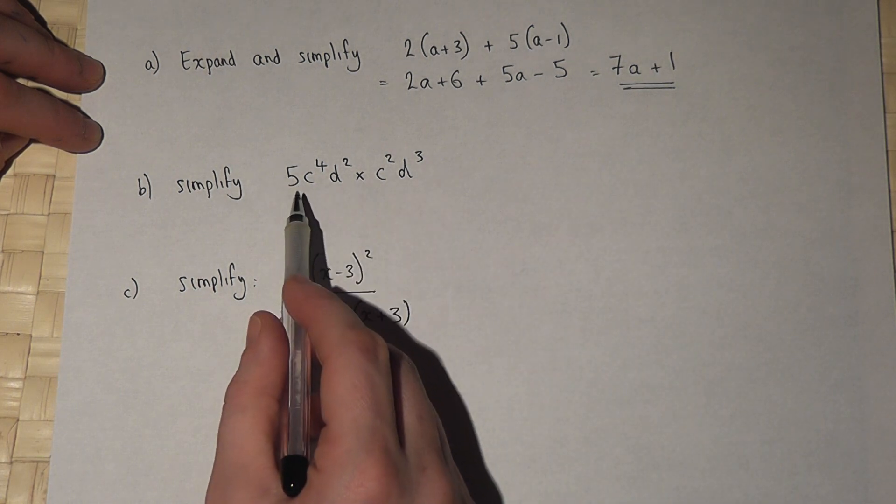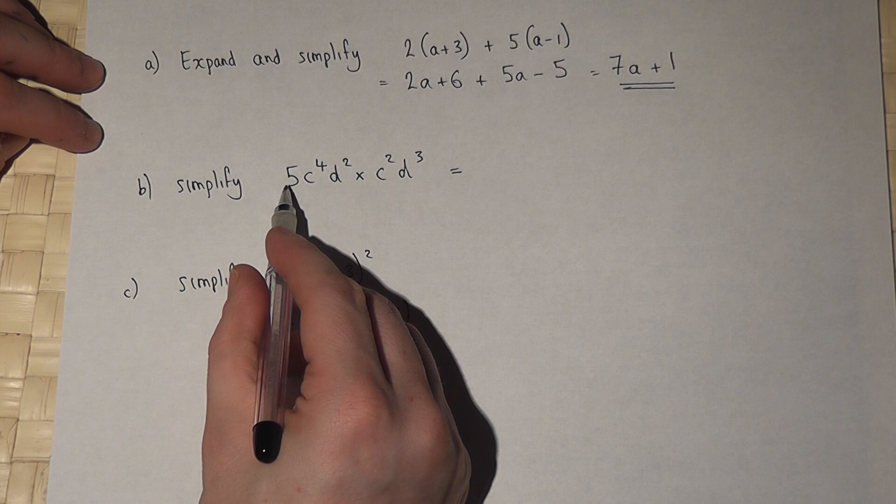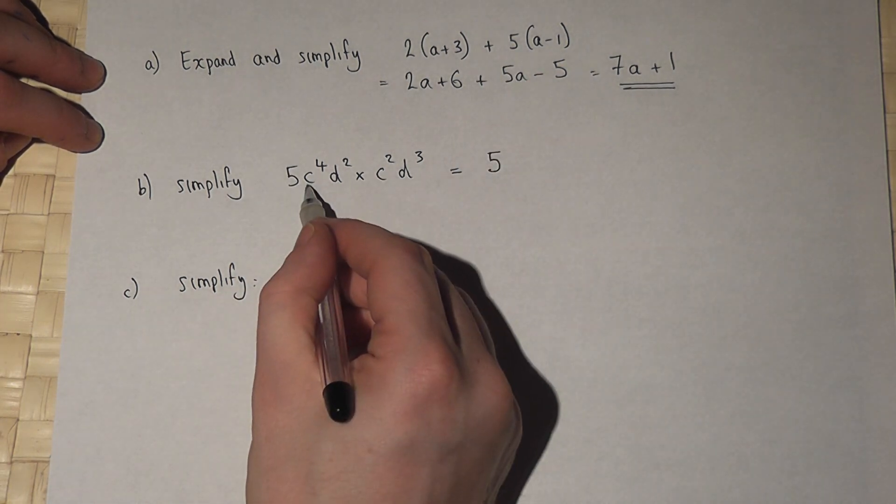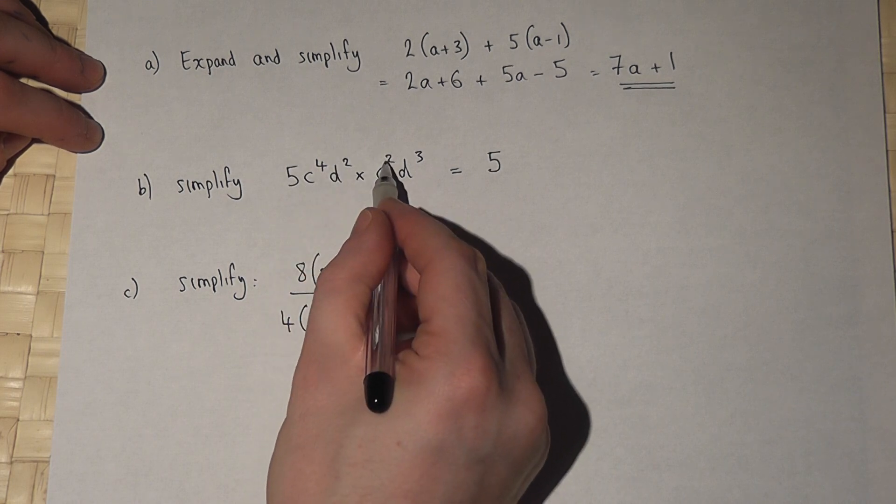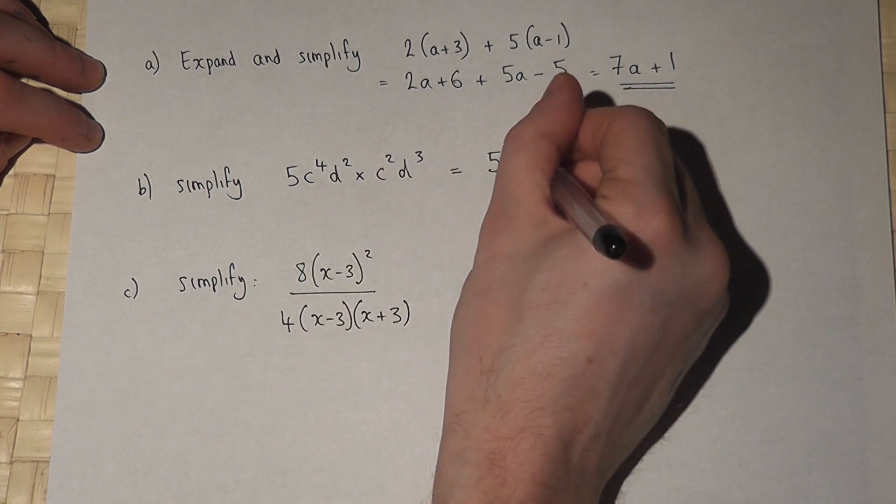In the second example, we have a 5. There's no other integer so it stays as a 5. Now c to the power of 4 times c squared, we add the powers, so 4 plus 2 is 6.